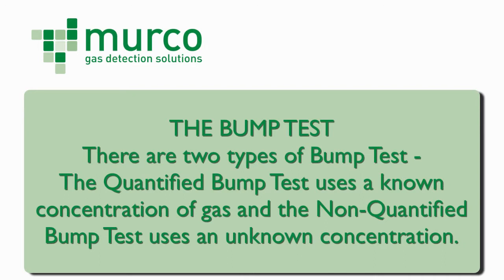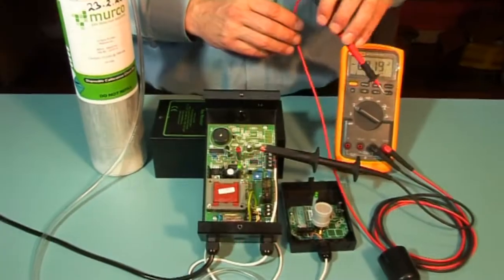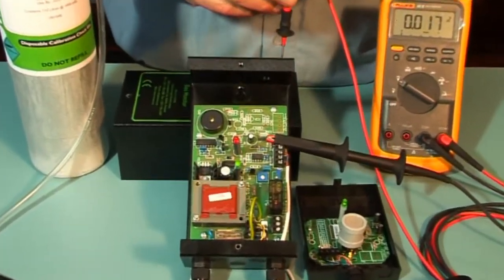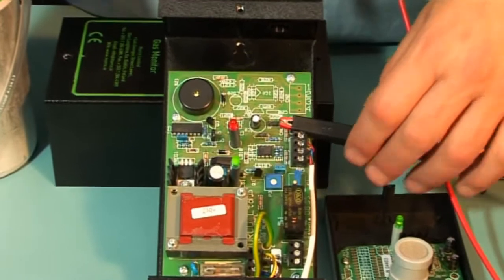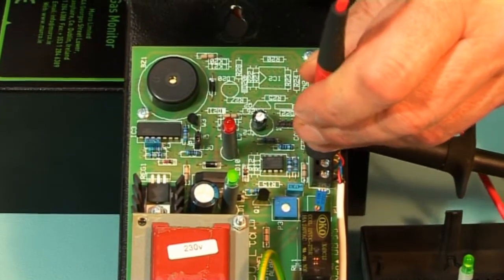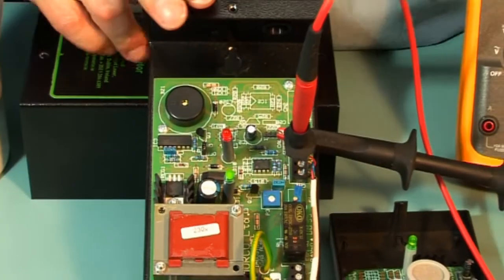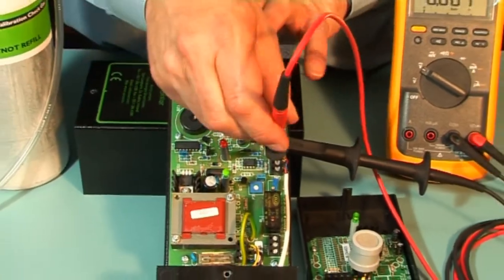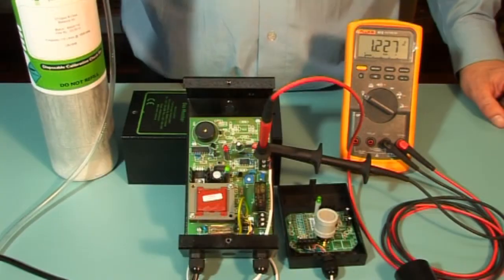For a one level system, connect the voltmeter between pin 4 on the CAL header and pin 2 on CN1. Once the sensor starts to see the gas, this voltage should increase.